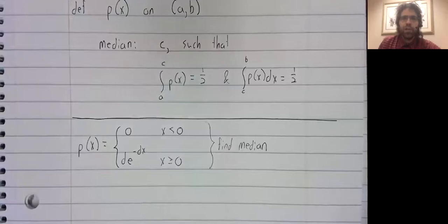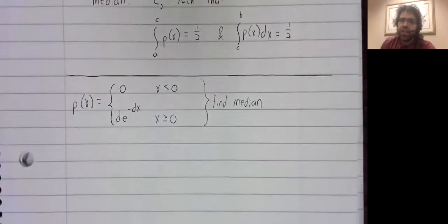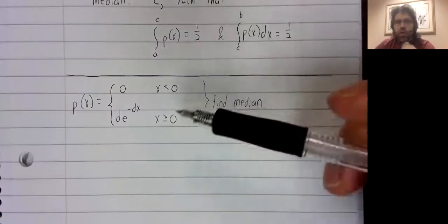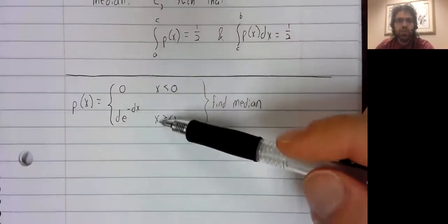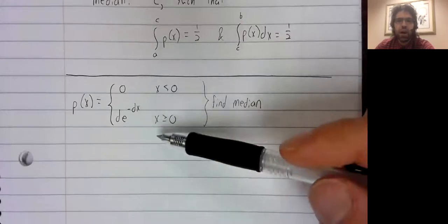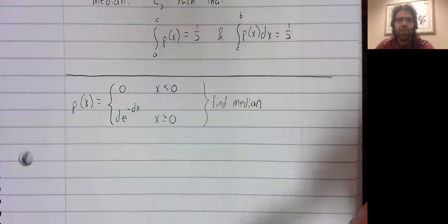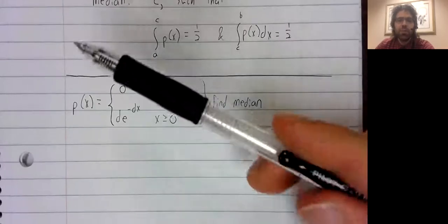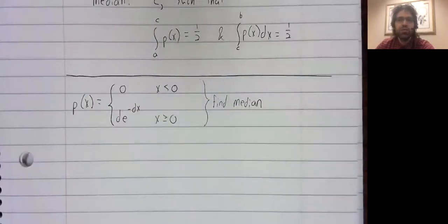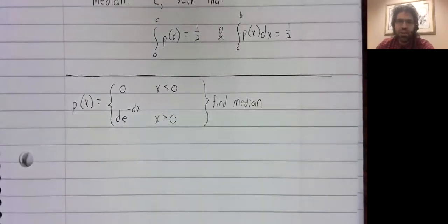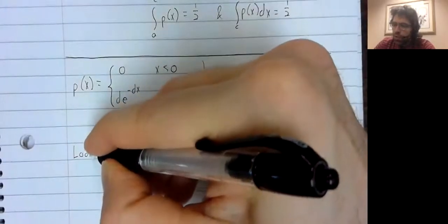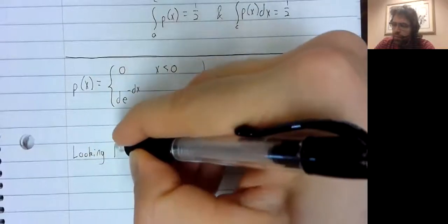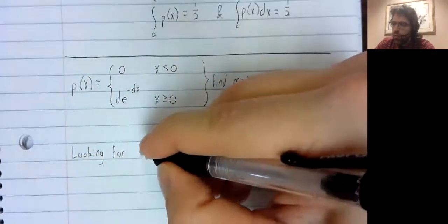We'll start by noting that the median is definitely a positive number. I know this probability distribution gets phrased as a probability distribution on all of R, but any randomly selected number using this distribution is positive. So we are looking for C,